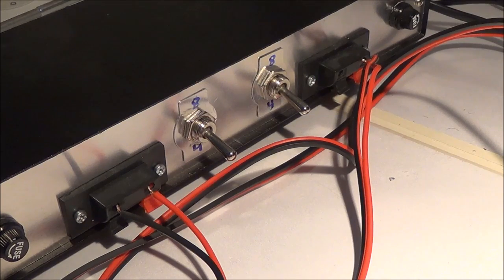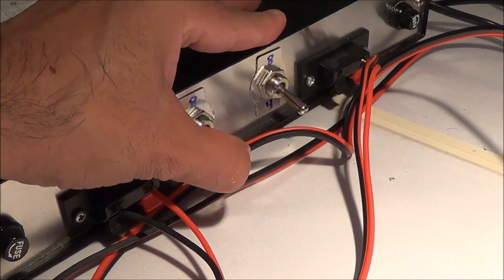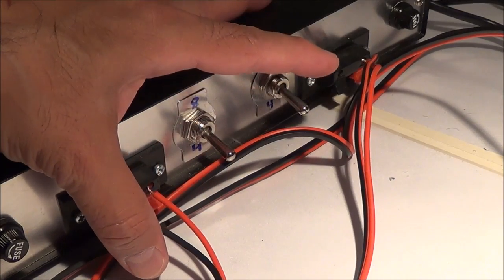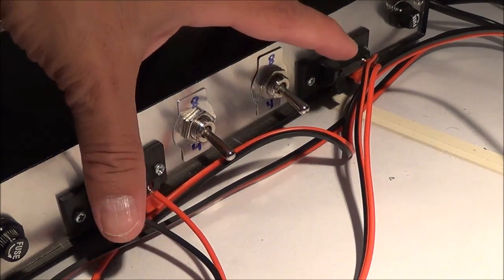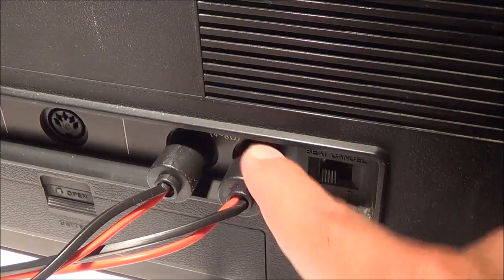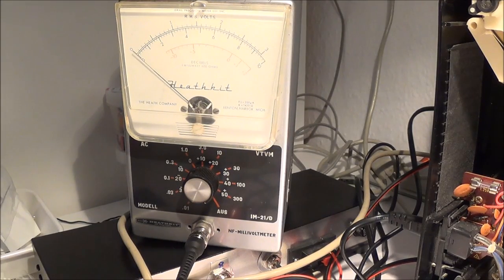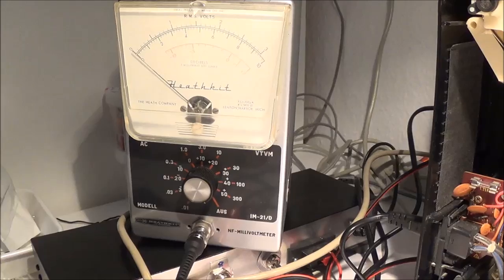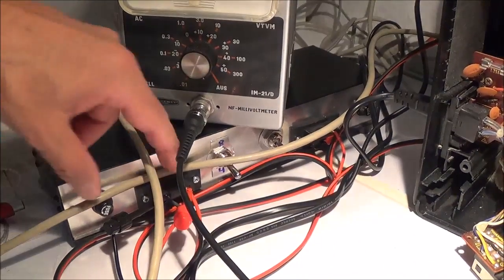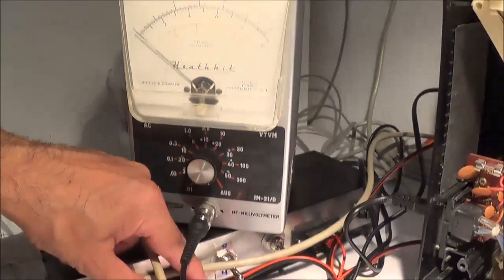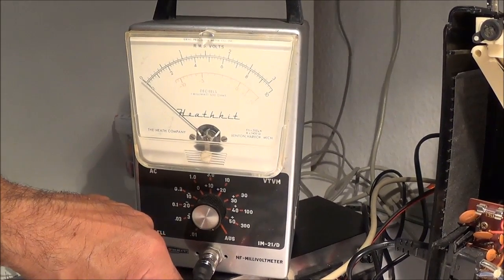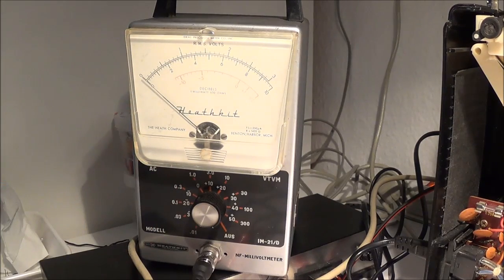Here's my hookup. I have my dummy load in the 4 ohm position. I've got the speaker cables running from the dummy load to the speaker output jacks of the Sharp GF91. In order to take the reading, I'm going to use my old Heathkit AC millivolt meter, and I've got that hooked up here across the dummy load speakers.